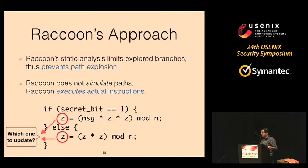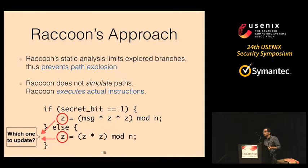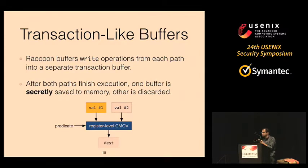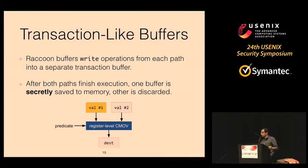The obvious question is how to maintain correctness when you have two values of Z that might override each other. We borrow a simple concept from transactions: each path of the program writes to a separate transaction buffer. When both paths finish executing, you decide which one to write to memory and which to discard, in a manner that does not leak any secrets. We do this using a register-level CMO operation — less than 10 lines of x86 assembly — and demonstrate it does not leak information through the instruction pointer, flags, microarchitectural state, or performance counters.